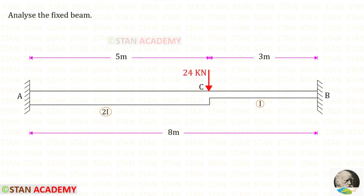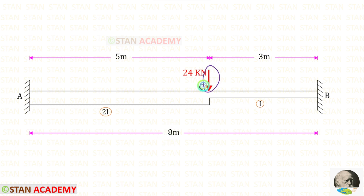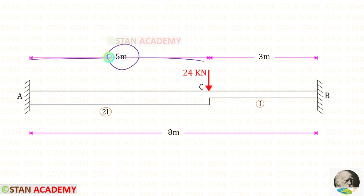Hello everyone. Today we are going to analyze this fixed beam. The span of the beam is given as 8 meters. There is a point load of 24 kilonewtons acting at a distance of 5 meters from the left support. For the left side 5 meters, the moment of inertia is 2I, and for the remaining distance of 3 meters, the moment of inertia is I.